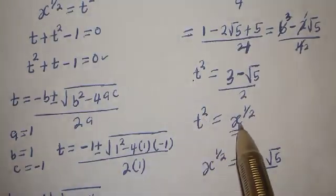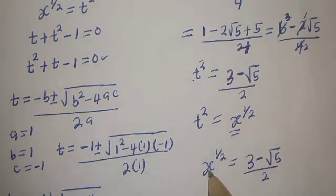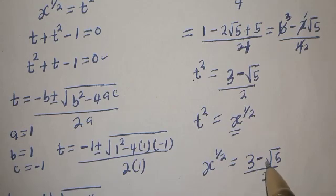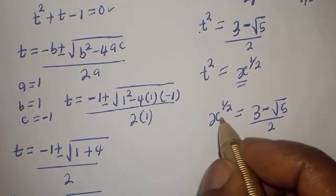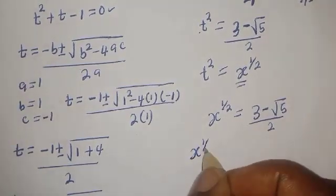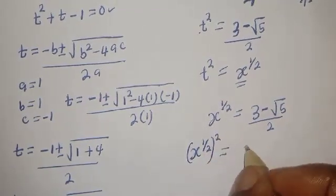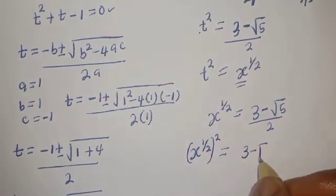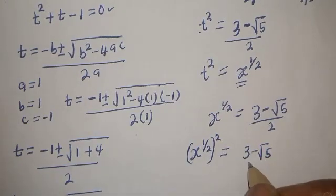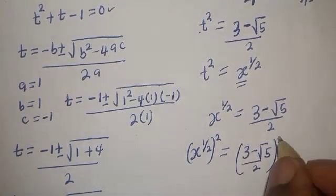But t squared is equal to x raised to the power 1 over 2, and we are looking for the value of x. Therefore, x raised to the power 1 over 2 is equal to 3 minus square root of 5 over 2. Let's square both sides of this equation: x raised to the power 1 over 2, squared, equals the quantity 3 minus square root of 5 over 2, squared.